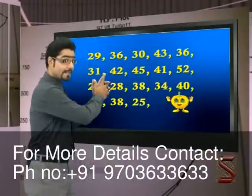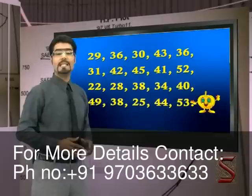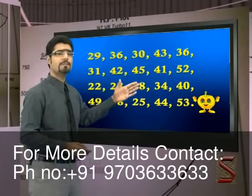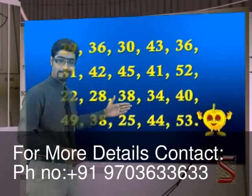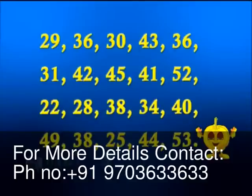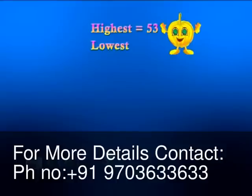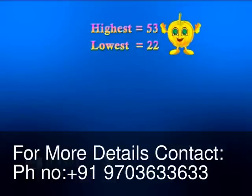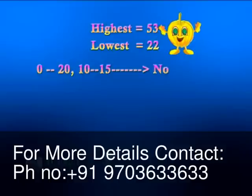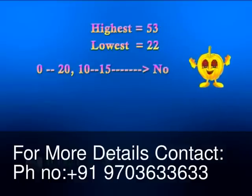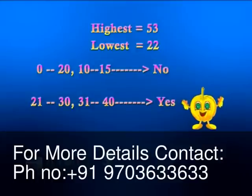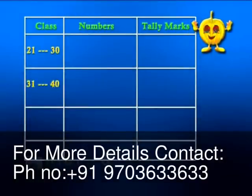Now look at this data set. In a botany experiment, 20 leaves were measured and the results are as follows. Let us try and sort the numbers here too. We first locate the lowest and then the highest number in our data set. We can now create classes to slot the numbers into, but all the classes have to be of equal length. We cannot have 0 to 20 and then 10 to 15 — no. It has to be 21 to 30, 31 to 40 and so on. So here we have our neat classes.